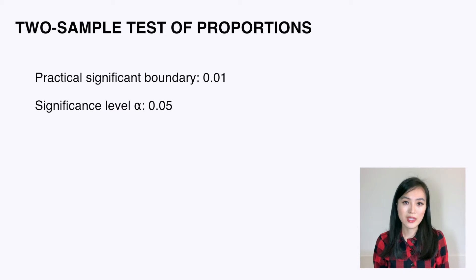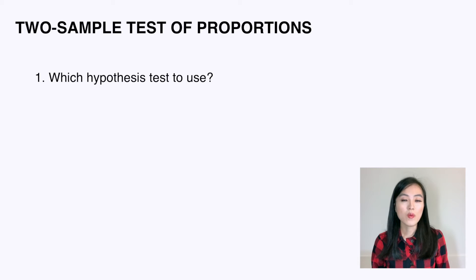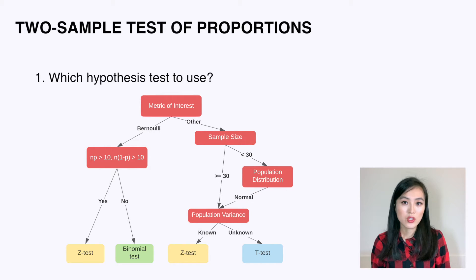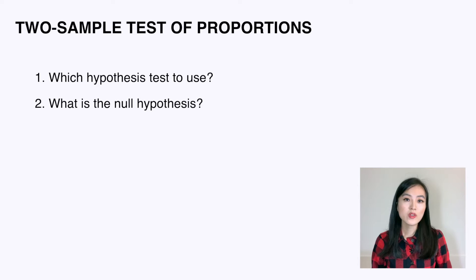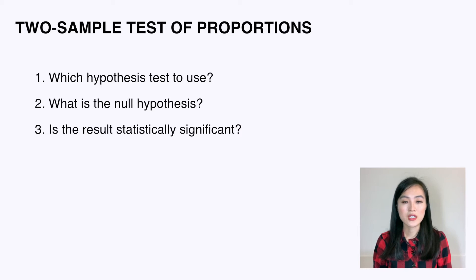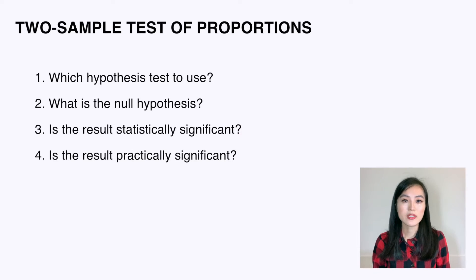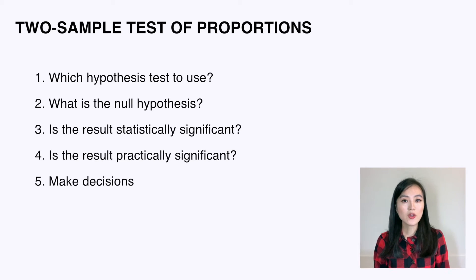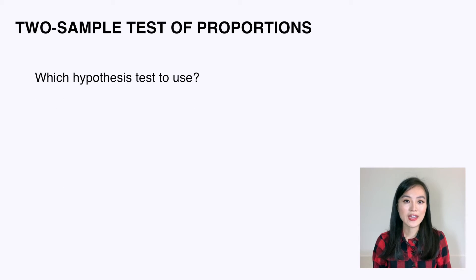Let's start by outlining the steps to analyze the result. First, we want to decide which hypothesis test to use — the diagram from the previous video could serve as a reference. Next, we should be clear on what the null hypothesis is. Then we evaluate if the test result is statistically significant by comparing the test statistic with the critical value. We also need to check if the result is practically significant by comparing the confidence interval with the practical significance boundary. Finally, we make a decision based on the result.